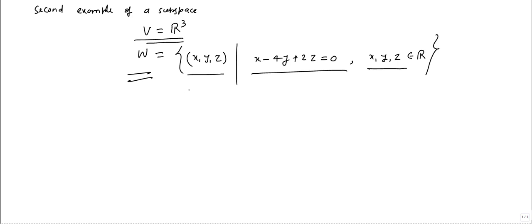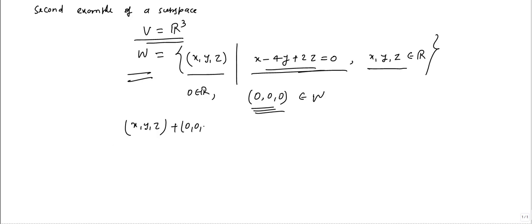We know that 0 belongs to R. If we take (0, 0, 0), this is an element of W because it satisfies the condition. This is the zero element of W. If we take any element (x, y, z) and add it with this zero element, we get the same coordinates, since addition in W follows coordinate-wise addition from R3. So (0, 0, 0) is the zero element of W, meaning W passes the first test.